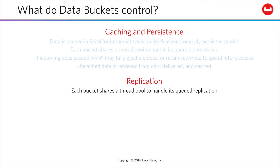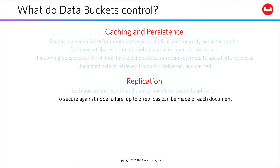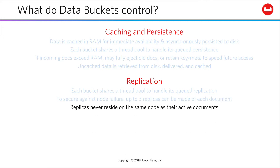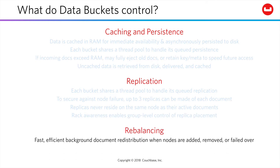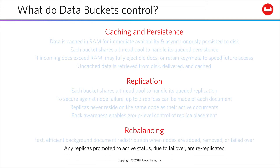Buckets also control replication to other nodes within a cluster via a shared thread pool. To ensure high availability, even on node failure, up to three replicas can be made of each document. Replicas never reside on the same node as the active document. Rack zone awareness allows group-level control over your replica placement. If a node is added, removed, or fails, documents are efficiently redistributed and rebalanced for the new topology. Any replicas made active due to a node failure are re-replicated on another node.